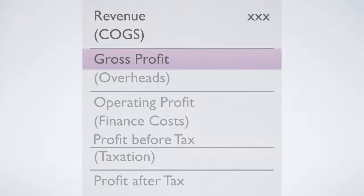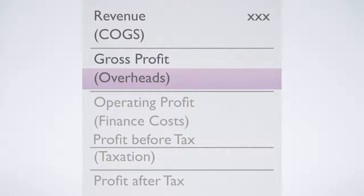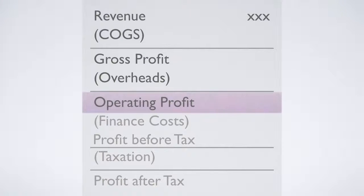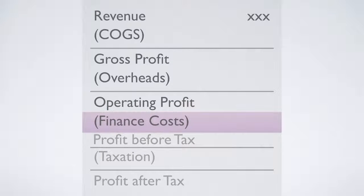Likewise, as all your overheads go up — at least by inflation and sometimes more — you pass it on to your client through your prices. So this means that, like the gross profit, the operating profit margin likewise doesn't change from year to year, or not by much. By that we mean operating profit as a percentage of revenue, as a percentage of sales. Finance costs or interest implies you've borrowed some money, and we'll come to that in a bit.